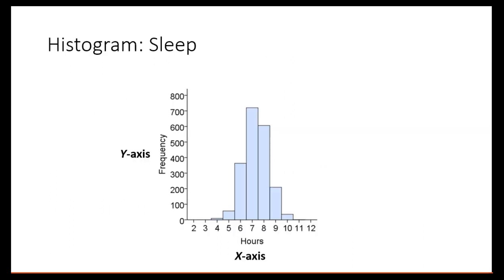Here's an example histogram. The x-axis is horizontal going from left to right, and the y-axis is vertical going from zero to a maximum of 800. This is a histogram of sleep — actual data from a real study. The range goes from 2 to 12 on the x-axis, and the frequency axis goes from zero to 800 observations. Each rectangle represents the frequency of observations corresponding to a particular value on the x-axis. For example, seven hours of sleep corresponds to about 710 people, and another rectangle corresponds to about 375.